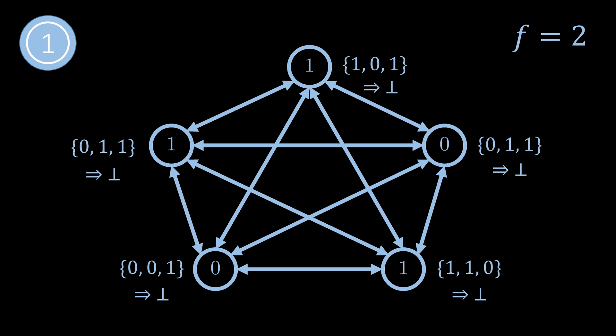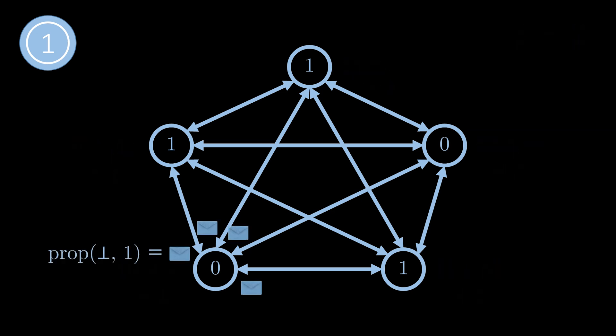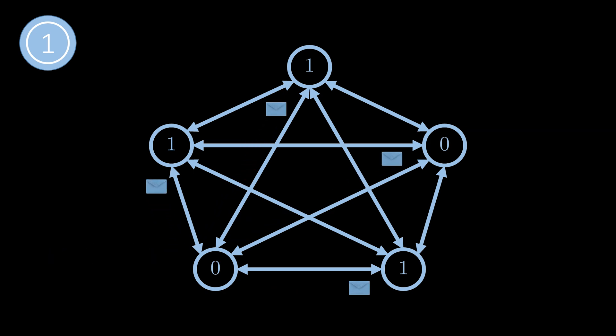If a node receives only zeros or only ones, it will propose that value. In the example here none of the nodes received only zeros or ones, so the nodes set the proposed value to the bottom symbol, meaning they do not propose any value. Every node then sends a proposal message for this round containing the proposed value if any. The node in the bottom left sends prop(⊥,1), meaning it doesn't propose any value for round one.